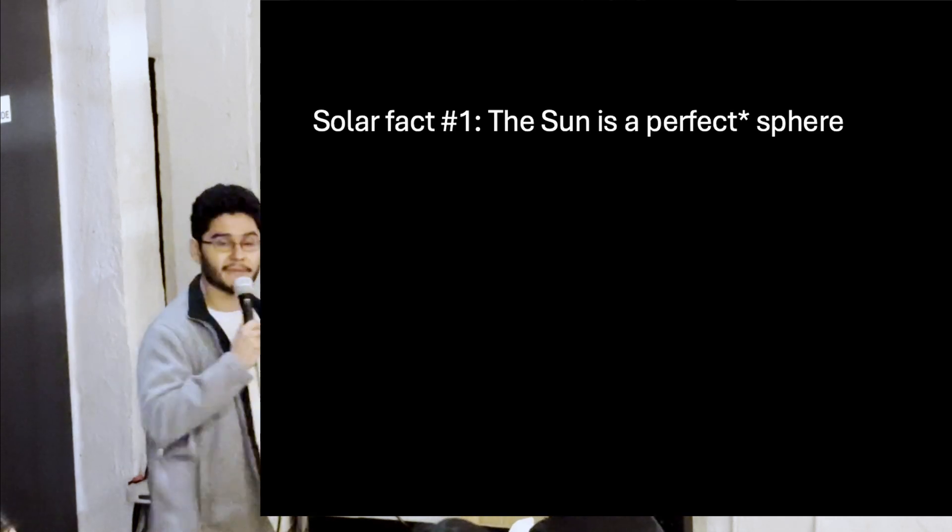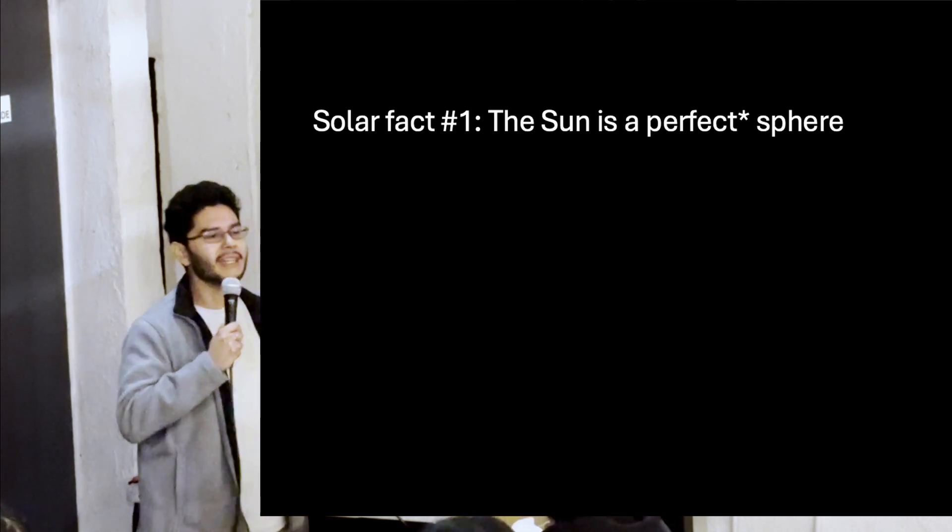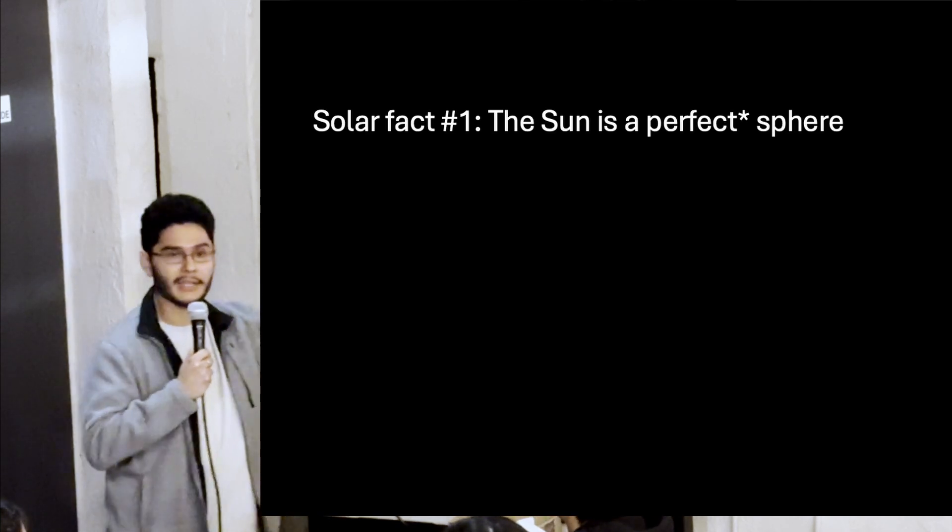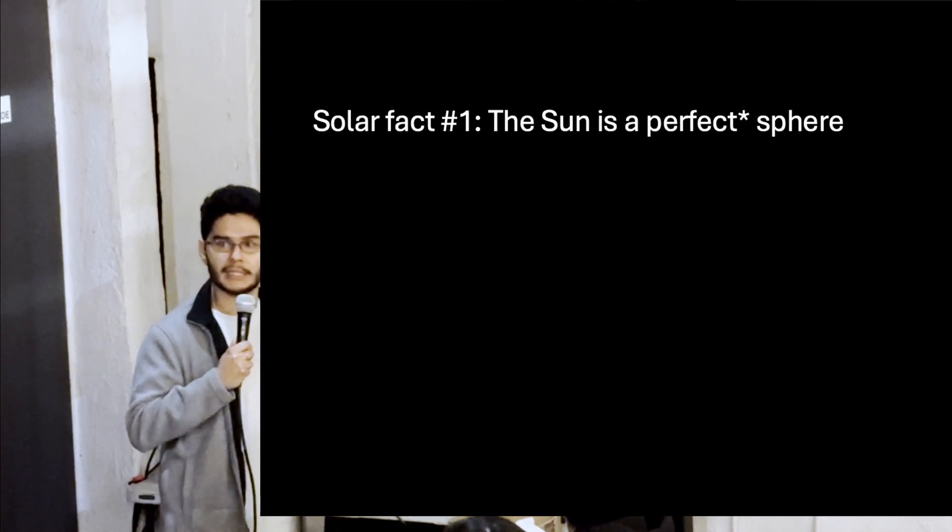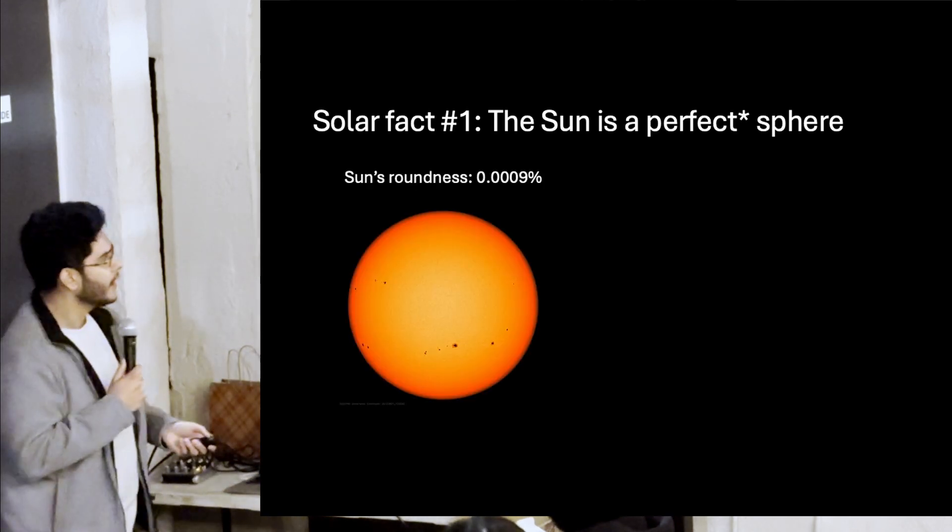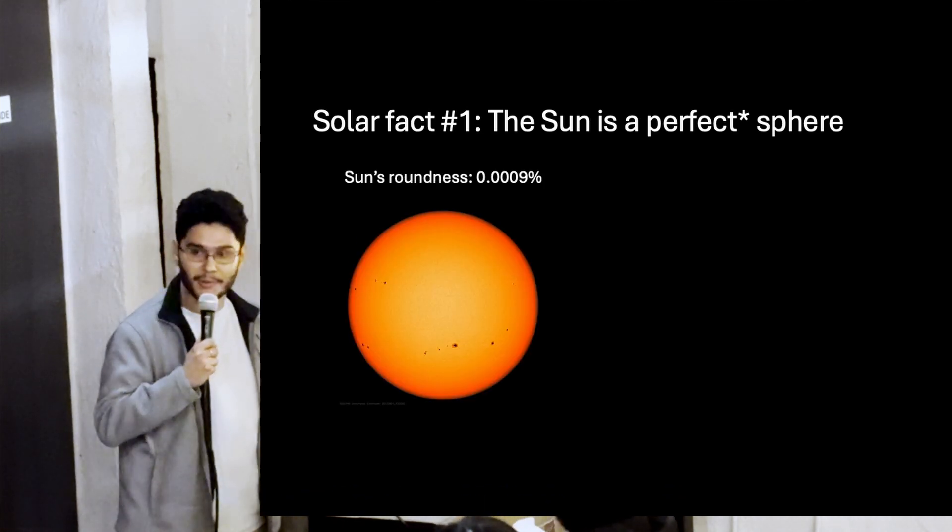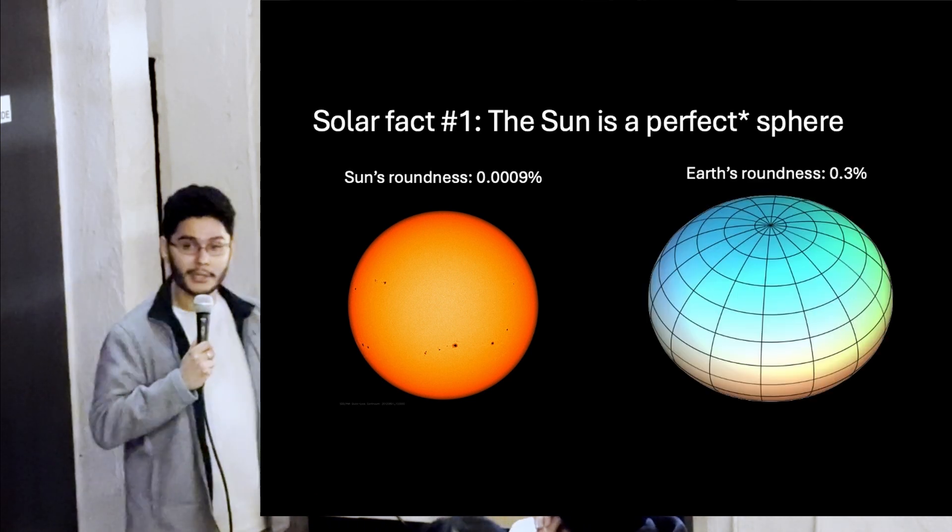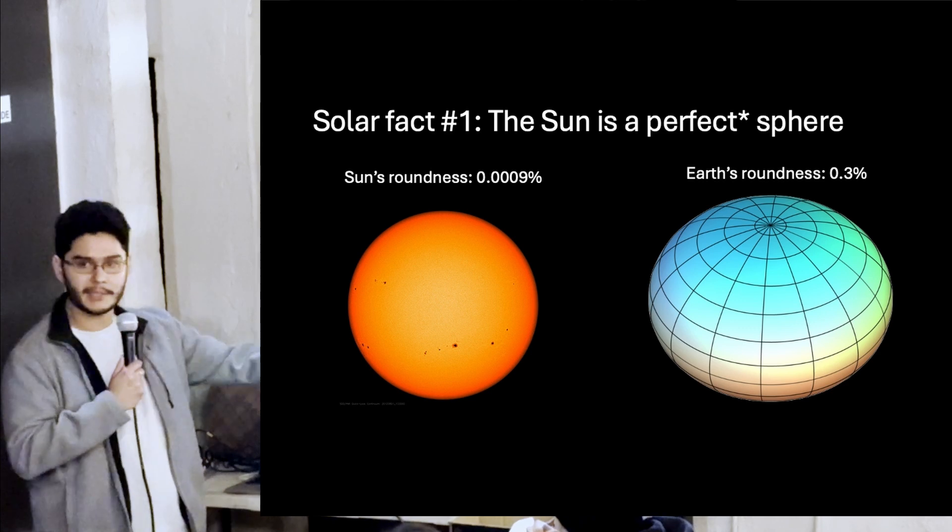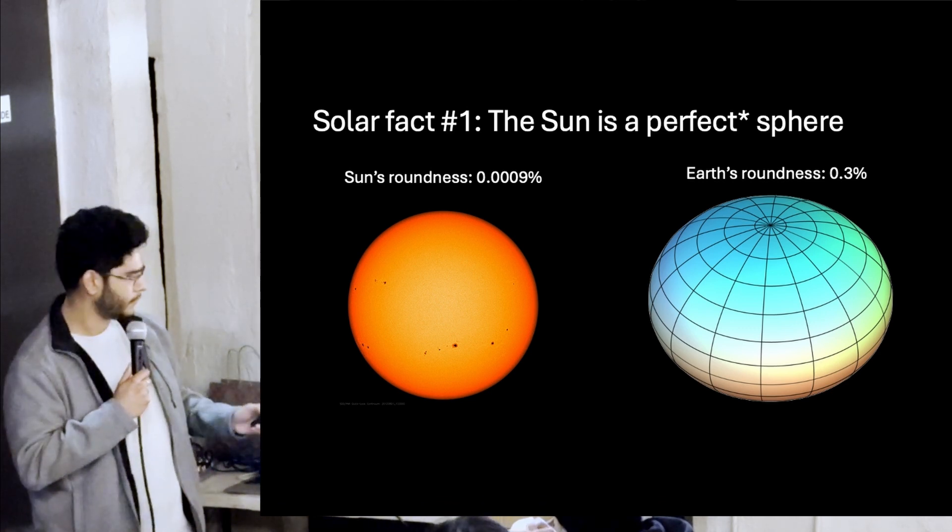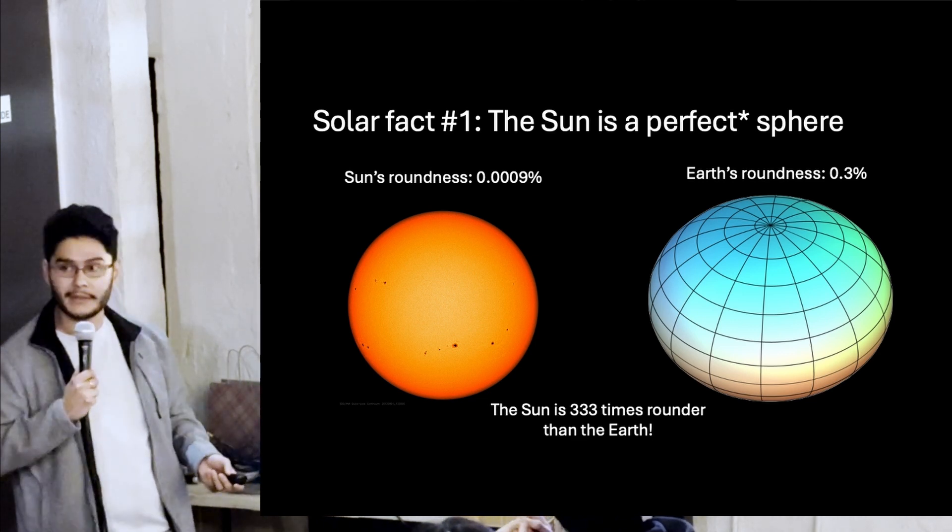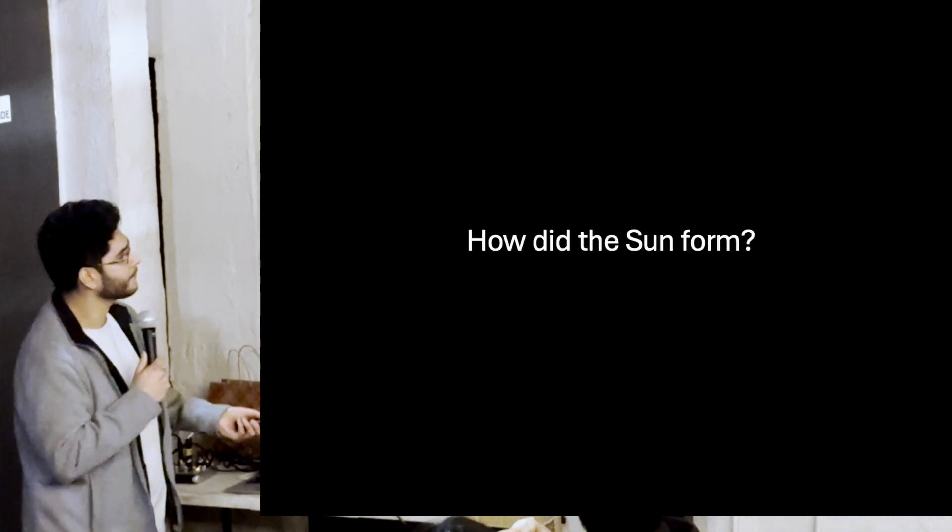Solar fact number one is the sun is a perfect sphere. There's an asterisk on that. Give me an example of what you might think is a perfect sphere. Basketball. A basketball is only about 1% perfectly spherical. So that means its radius can vary from the average radius by a factor of 1%. The sun can vary by 0.0009%. That's crazy. Earth is actually rounder than a basketball, and we know Earth is not a perfect sphere. The correct term to refer to Earth by is called an oblate spheroid. It's stretched out at the equator.